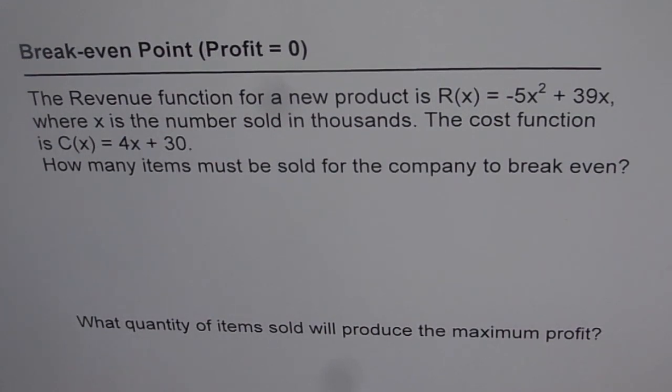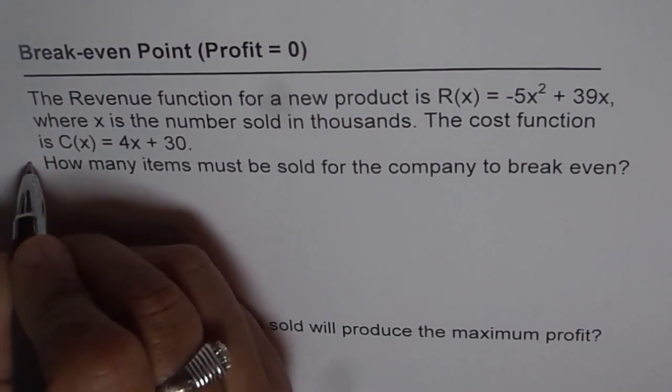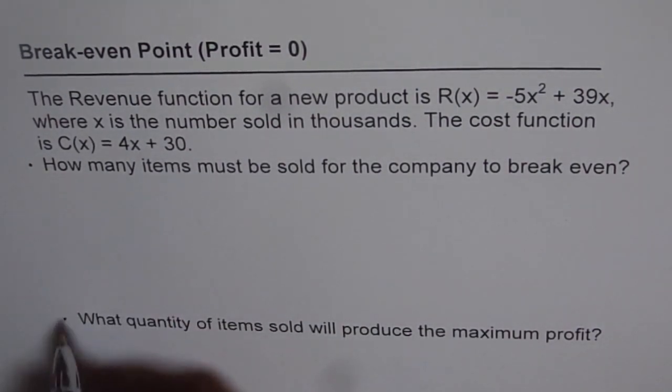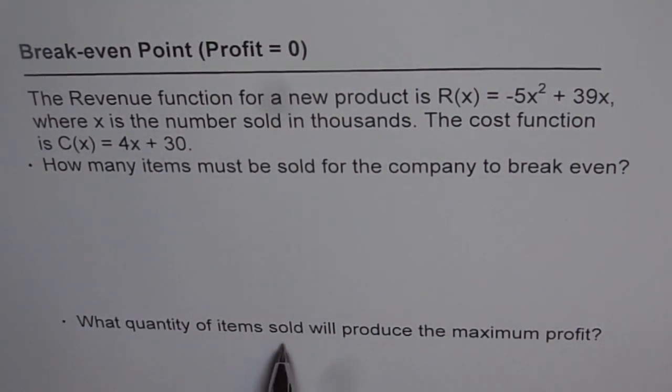How many items must be sold for the company to break-even? That's part A of the problem. And part B is, what quantity of items sold will produce the maximum profit?